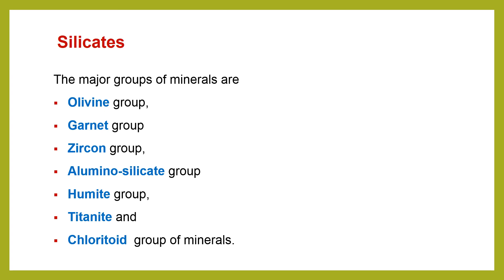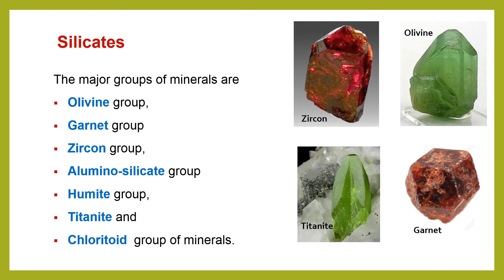We also have the chloritoid group of minerals. Each one of these groups has other elements or varieties, so please read about them. I will include some pictures of all these minerals just to give you an idea about these silicate minerals. You can see the beautiful green color of olivine, then you have zircon, titanite, and garnet — very well crystallized minerals. This is enough for us to study about the classification of minerals.